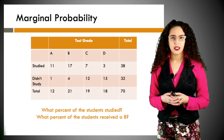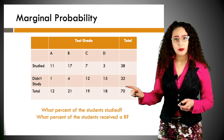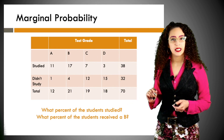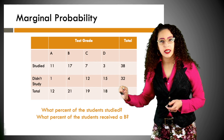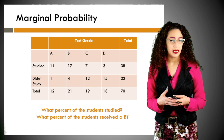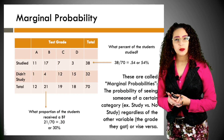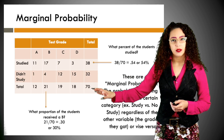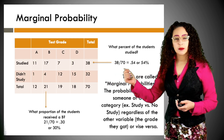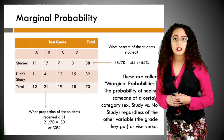Let's look at marginal probabilities. I've added totals: 38 people studied regardless of grade, 32 did not study, and the grade totals are 12 got an A, 21 got a B, 19 got a C, and 18 got a D, with an overall total of 70. What percent of students studied? We divide 38 by 70 and get 0.54 — 54 percent studied. What percent got a B? 21 divided by 70 is 0.30 — 30 percent got a B regardless of whether they studied. These are called marginal probabilities.